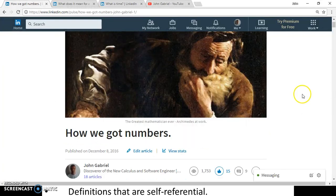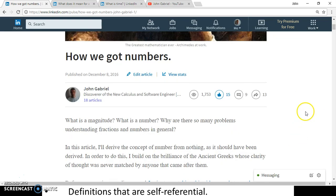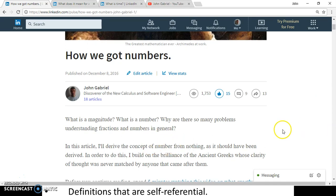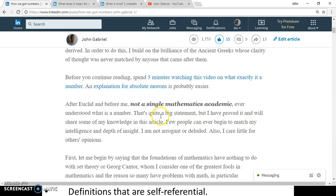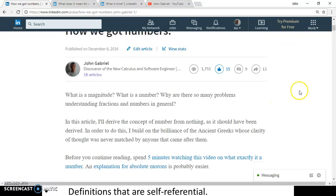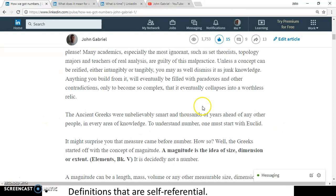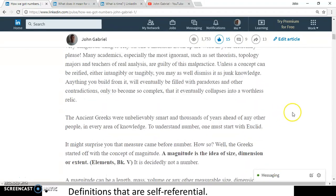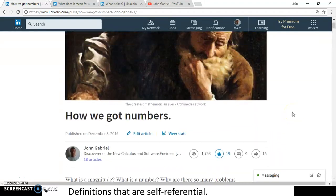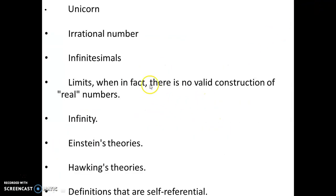There's an article on LinkedIn here called How We Got Numbers. And unless you read this article, I don't care if you're the world's greatest professor or if you won five Fields Prizes or a Nobel Prize, you're a moron if you haven't read this article. You do not have a clue what it means to be a number. You need to read and study this article very carefully because this tells you what it means to be a number.